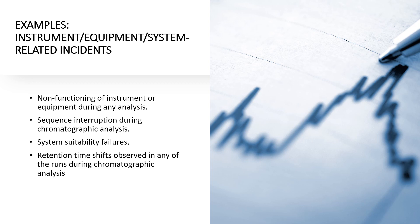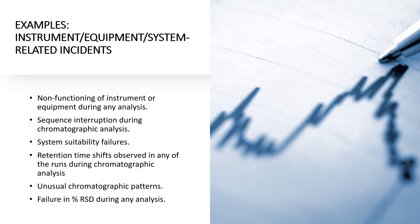Further instrument-related incident examples include: retention time shifts observed in any run during chromatography analysis beyond the limit specified in the test procedure; unusual chromatography patterns such as noisy or drifting baseline, or atypically observed shapes such as a hump or spike on the inlet peak; and failure in percent RSD during analysis — such as standardization of volumetric solution or Karl Fischer reagent. These are examples related to instrument, equipment, and system incidents.